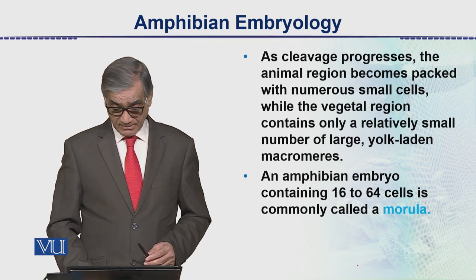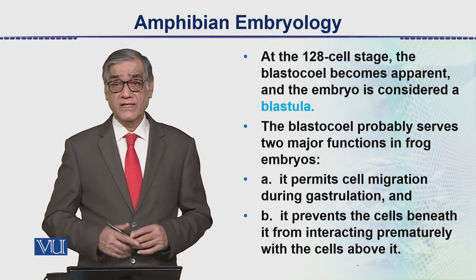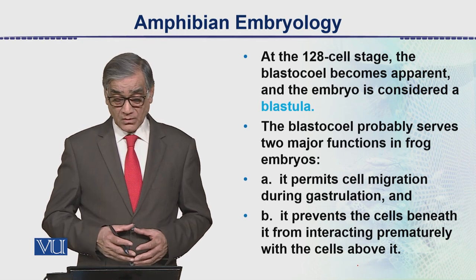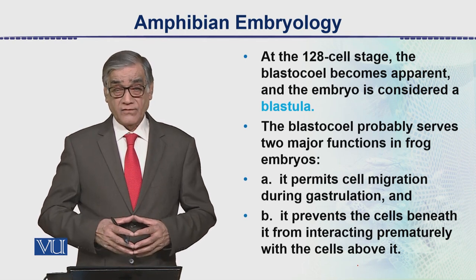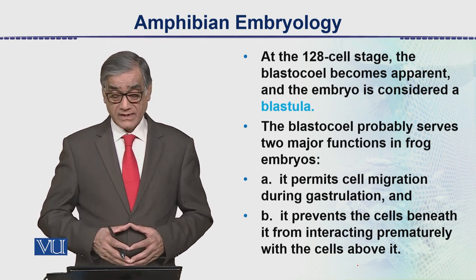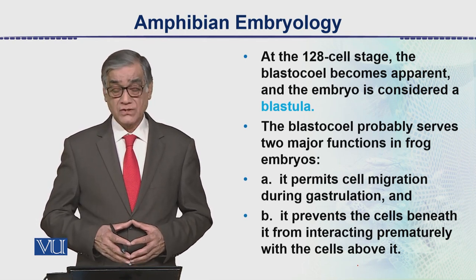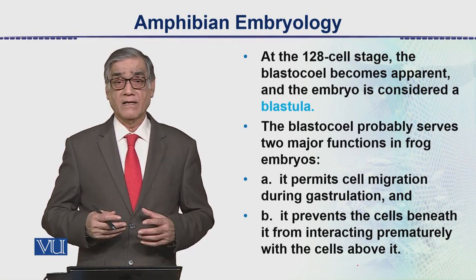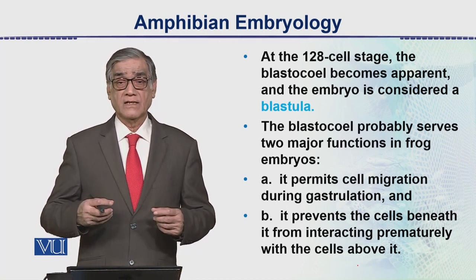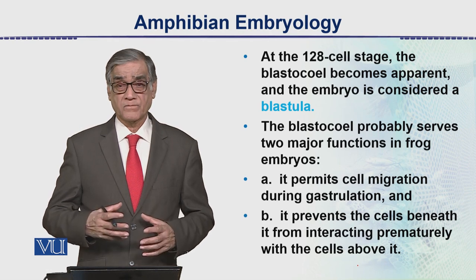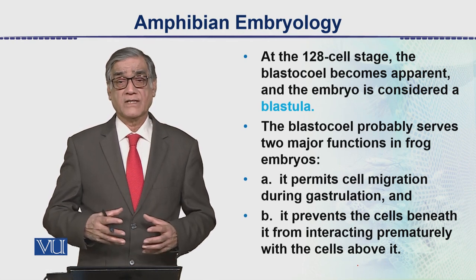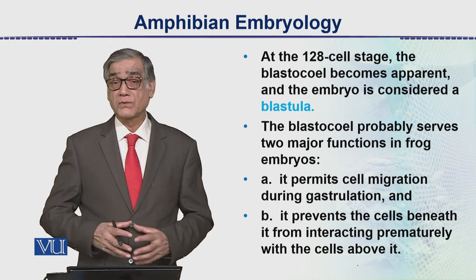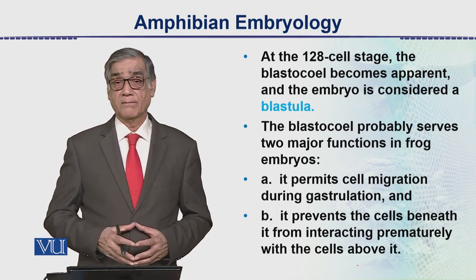The next stage is the blastula. At the 128-cell stage, the blastocoel becomes apparent — a cavity develops at the animal pole. This cavity is called the blastocoel, and the embryo at this stage is called the blastula.